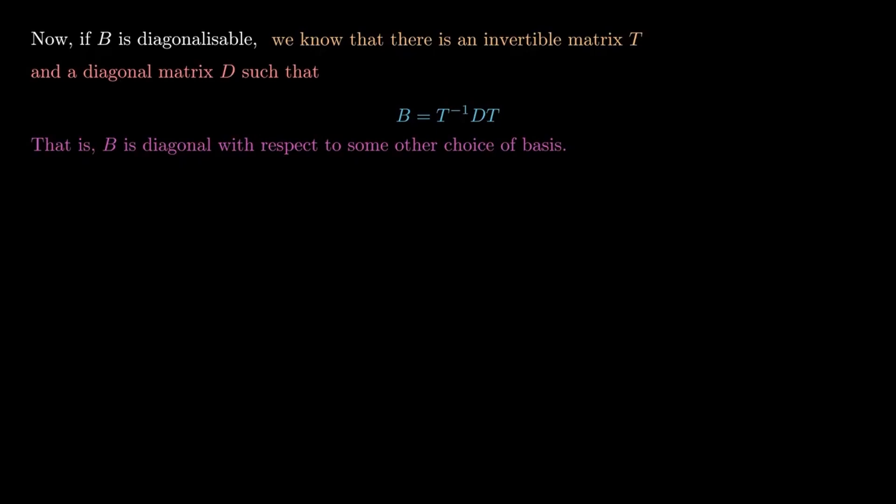similar, then I can write A = P^(-1)BP. Using the fact that B is diagonalizable with B = T^(-1)DT, we can write that A = P^(-1)T^(-1)DTP.